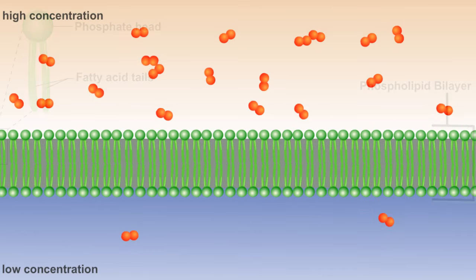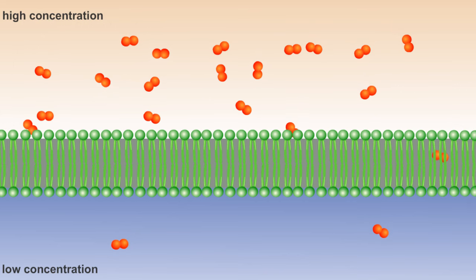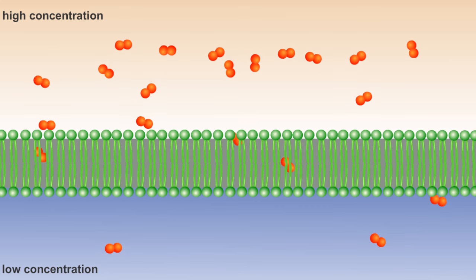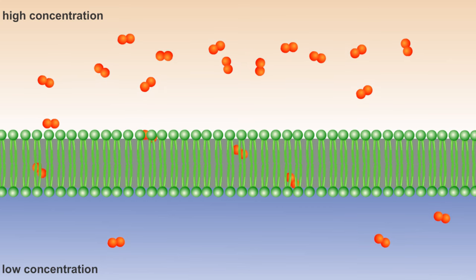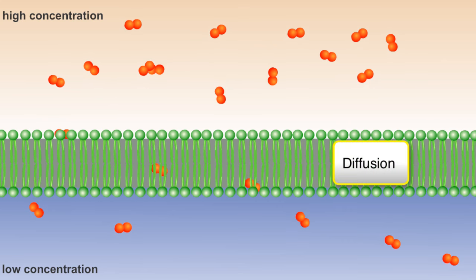In general, small non-charged molecules such as oxygen or carbon dioxide can freely cross the membrane without an input of energy. They are able to slip between the heads of the phospholipids and pass through the hydrophobic tails through a process known as diffusion.